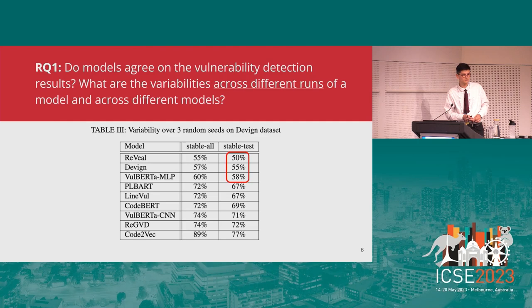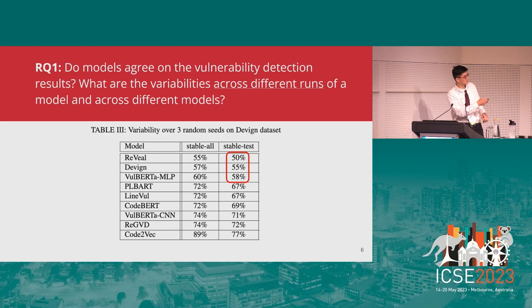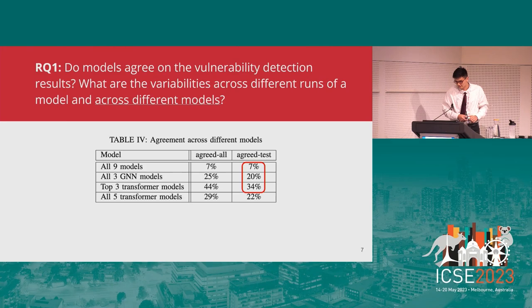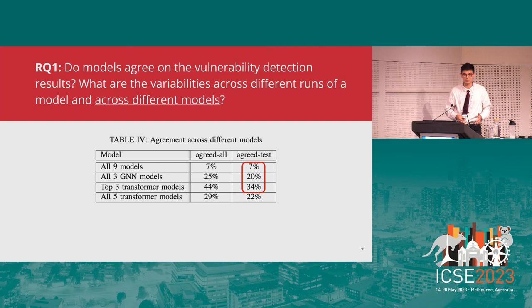For the first research question, we asked: do models agree on vulnerability detection results, and what are the variabilities across different runs and across different models? This table shows results over three random seeds of training on the Devign dataset — what percentage of examples had the same prediction from all three seeds. In the worst cases, up to 50% of examples are predicted differently across random seeds, which can affect evaluation quality. We also found that models learned diverse classifiers but had similar predictions when sharing similar architectures.